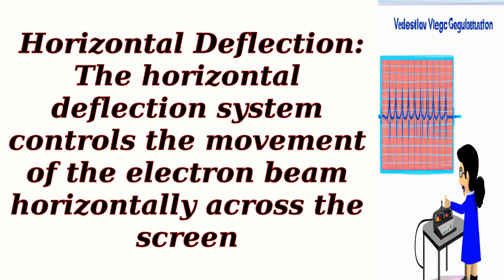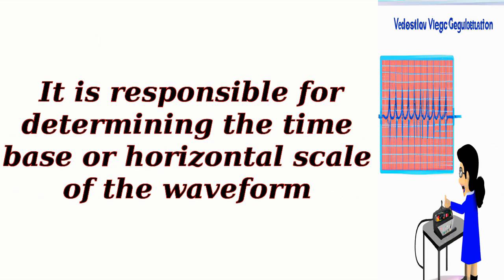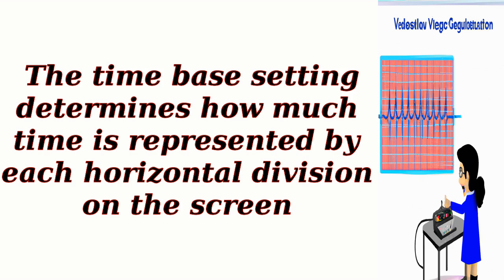Horizontal Deflection: the horizontal deflection system controls the movement of the electron beam horizontally across the screen. It is responsible for determining the time base or horizontal scale of the waveform. The time base setting determines how much time is represented by each horizontal division on the screen.